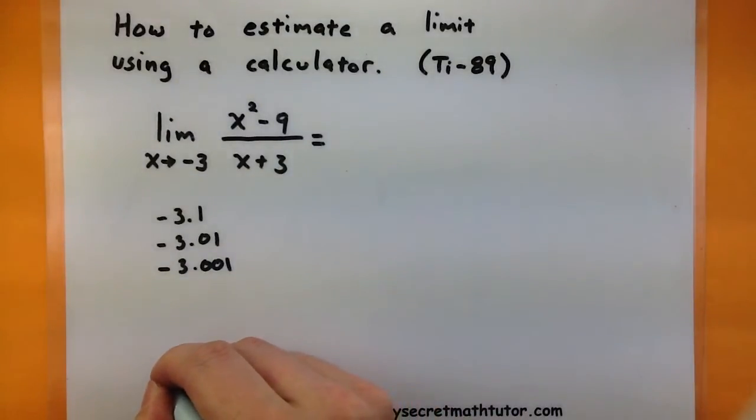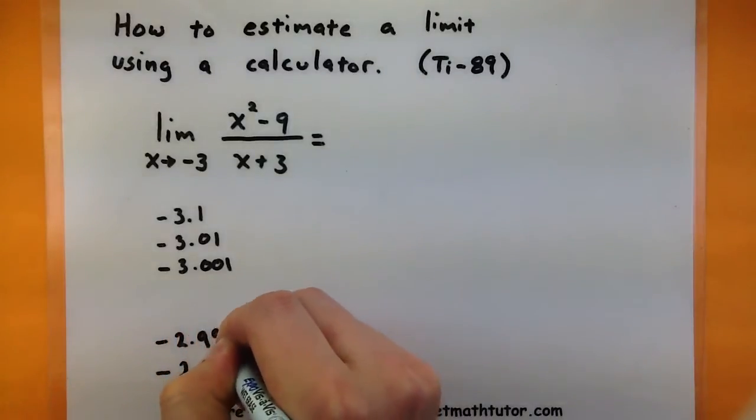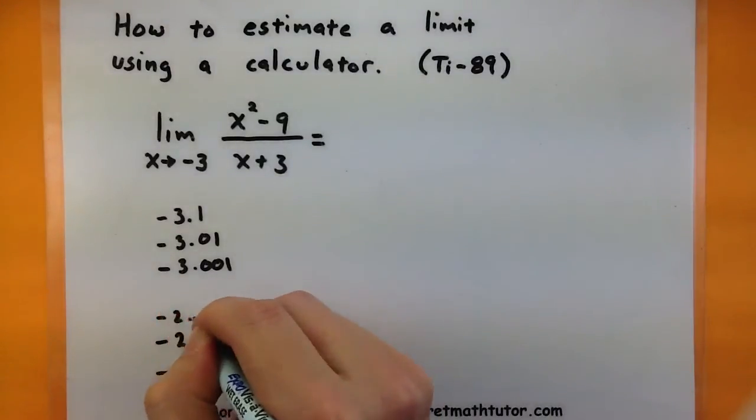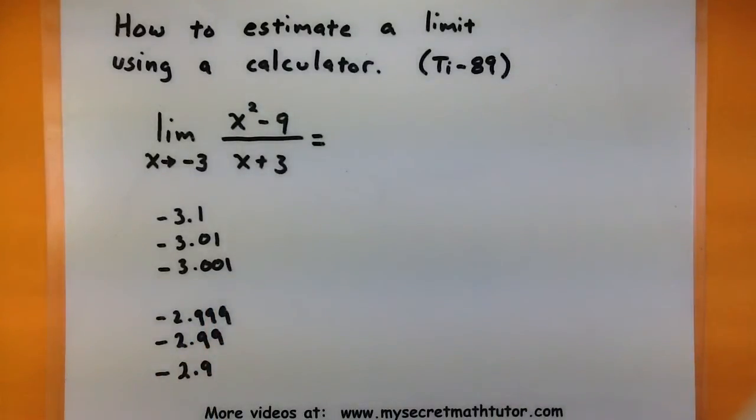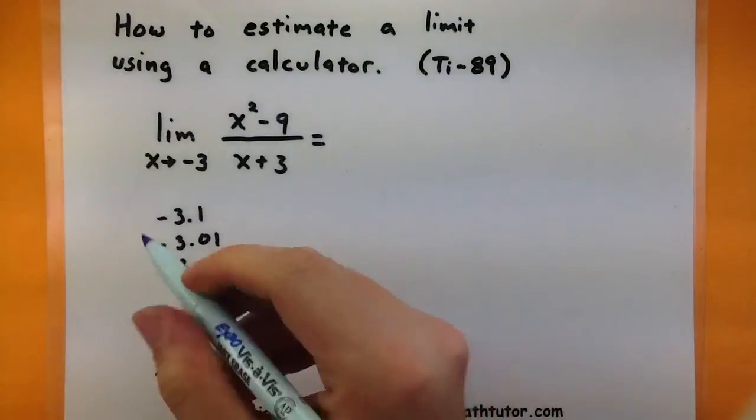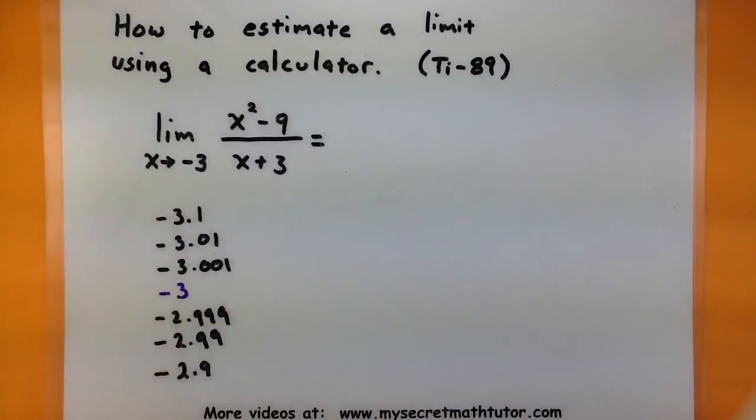If I choose things on the right side, I might start at 2.9, get closer at 2.99, then 2.999. And so you can see that those are on the right side and they're definitely getting closer. I won't actually evaluate negative 3, but I'm going to put this in my table as an estimate as to where that limit is.